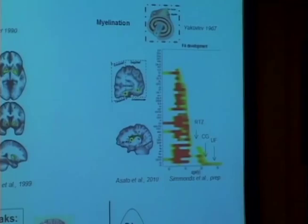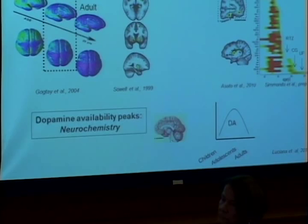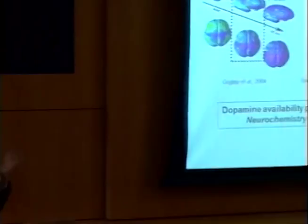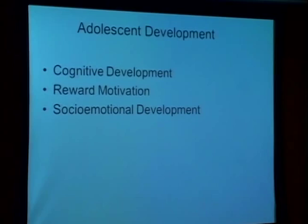The neurotransmitter dopamine is peaking in its availability during the adolescent period. We have a brain that is very much driven towards sensation-seeking because there is a lot of dopamine already present. This will make more sense as we get into brain function. I'm going to cover three major things: cognitive development, reward motivation, and social-emotional development.